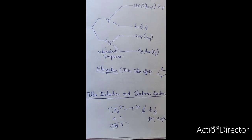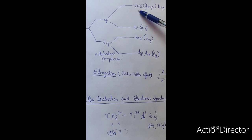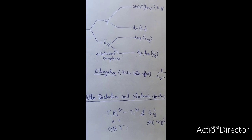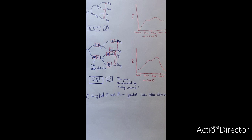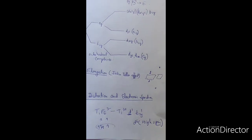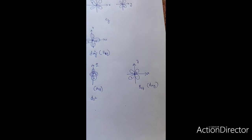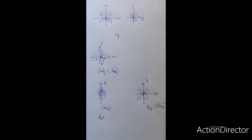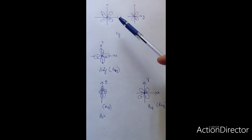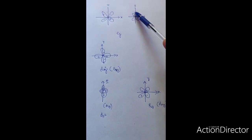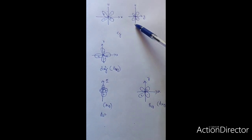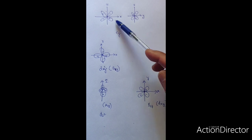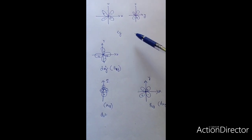Now we can give names to these orbitals. We name them Eg, B2G, A1G, and B1G. The names of orbitals can be given on the basis of their symmetry. In case of Eg orbitals, the dxz and dyz orbitals remain degenerate during lowering of symmetry, so their name is Eg — E means doubly degenerate.